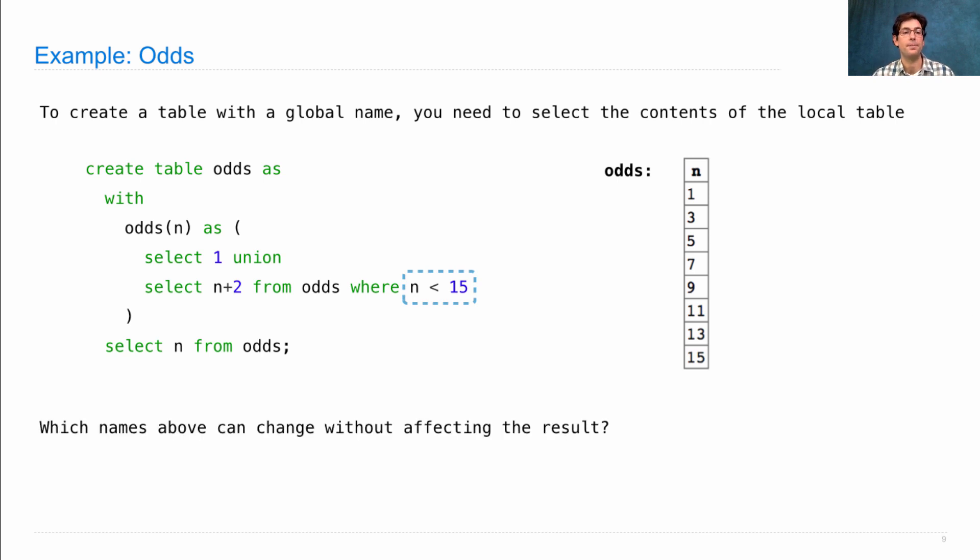Here's a question. Which names above can change without affecting the result? I still want to create a table called odds with a column called n that has this contents in it. The answer is that the name of the local table is irrelevant to the output. I didn't have to call this odds. I could have called it anything. But I'd have to change it in all three of these places in order to have the create table statement still work correctly.